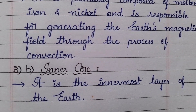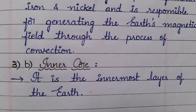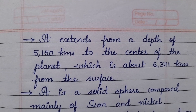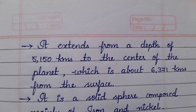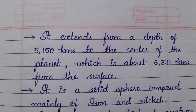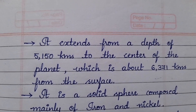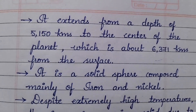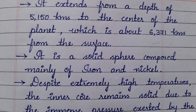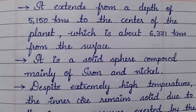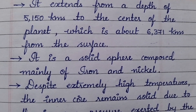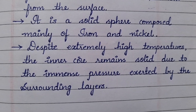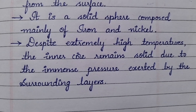Lastly, the inner core — it is the innermost layer of the earth. It extends from a depth of 5,150 kilometers to the center of the planet, which is about 6,371 kilometers from the surface. It is a solid sphere composed mainly of iron and nickel. Despite extremely high temperatures, the inner core remains solid due to the immense pressure exerted by the surrounding layers.